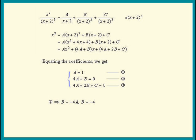Now put a equal 1 and b equal to negative 4 into equation 3. We get c equals 4.